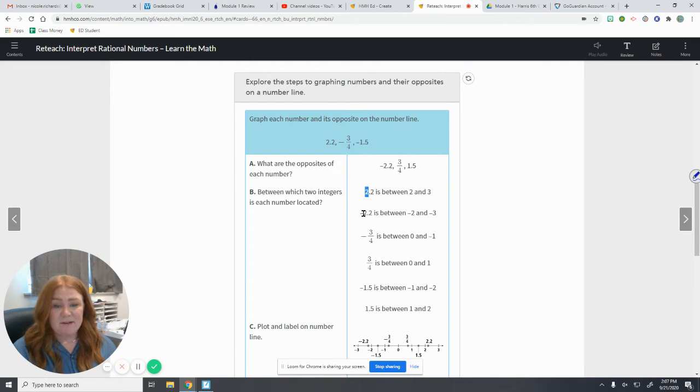Then we have negative 2.2. I know it starts at negative 2. And the next counting number is negative 3. So it's between negative 2 and negative 3. On negative 3/4, that does not have a whole number in front of it. It's 0. And the next counting number is negative 1. So it's on the negative side, between 0 and negative 1.